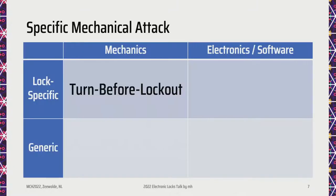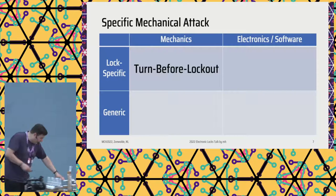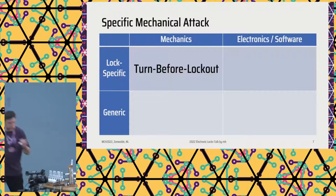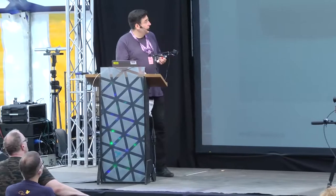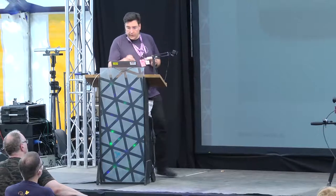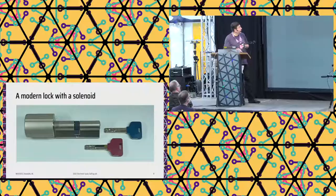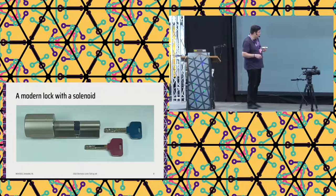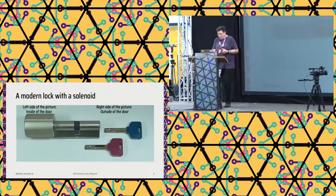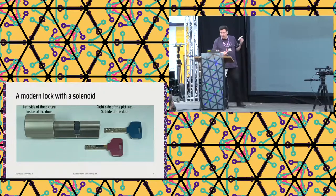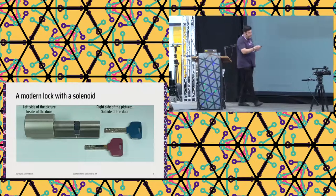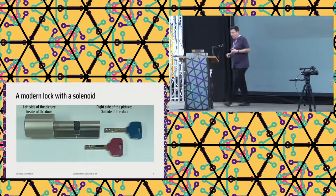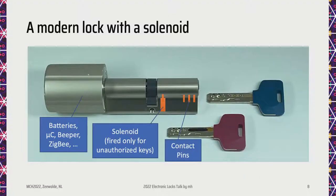But I did find a modern lock with a solenoid. And this is now a lock-specific mechanical attack on a very specific lock. This is an electromechanical lock with mechanical keys, and the keys also have a little chip and electrical contacts that you can see here. Here I actually covered them up with a little bit of tape. In this presentation I typically put the left side of the picture as the secure inside of the door, and the right side as the outside. In this case you would have the key on the outside and the knob on the inside. This lock works with batteries on the inside knob, and then there is a solenoid.